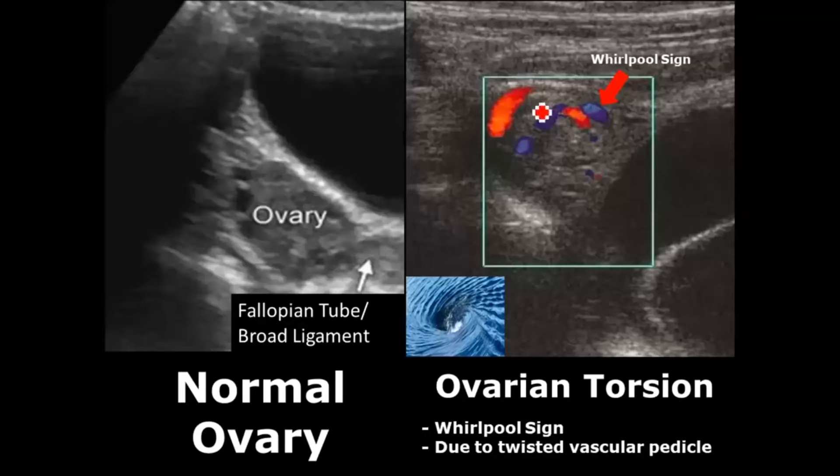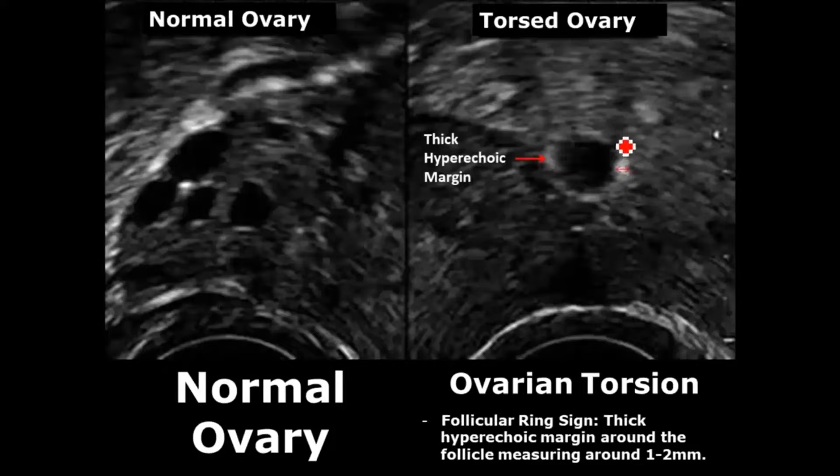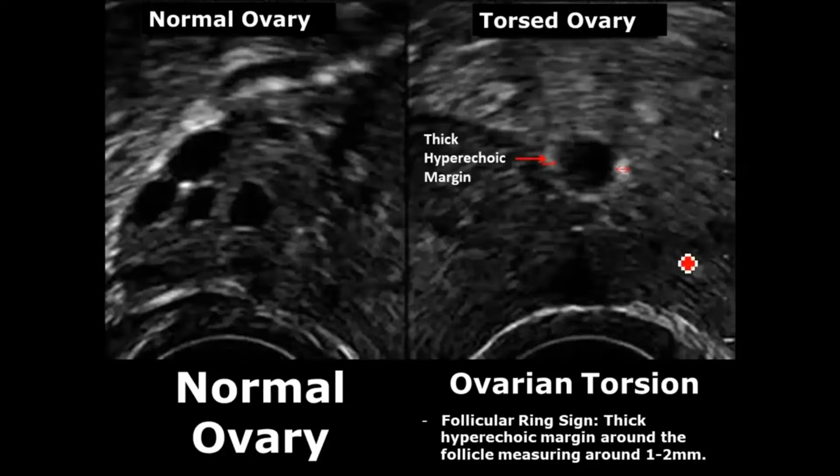Another important sign in some cases of ovarian torsion is the follicular ring sign — a thick hyperechoic margin around the follicles that can measure 1 to 2 millimeters.